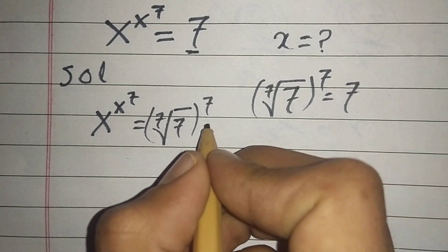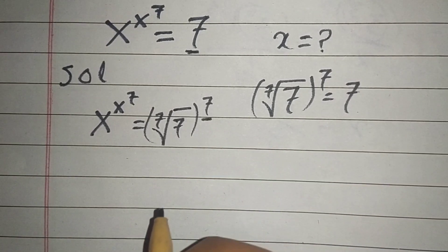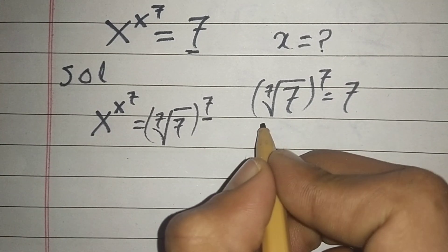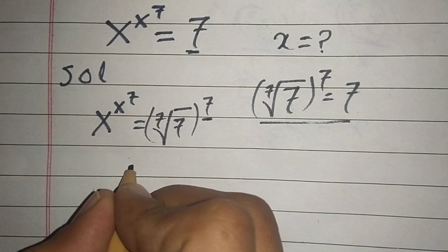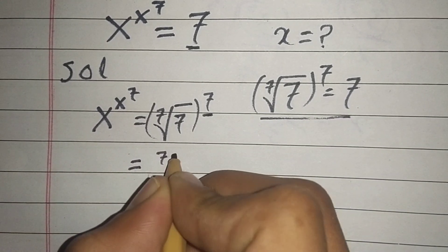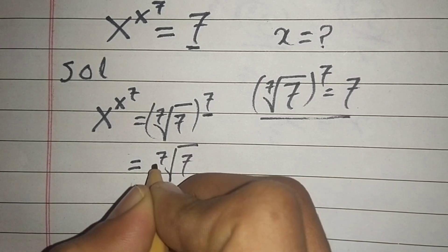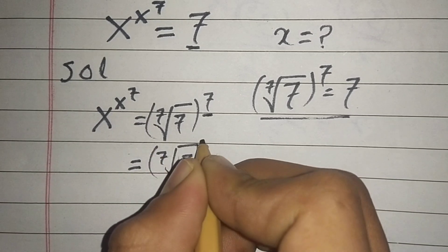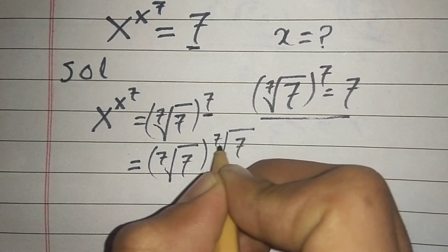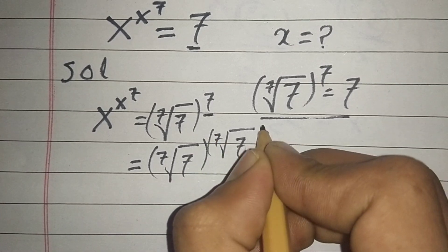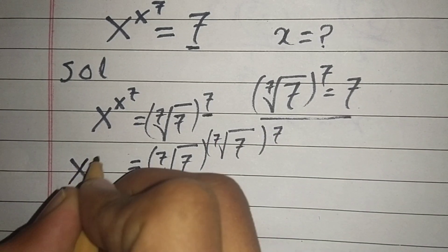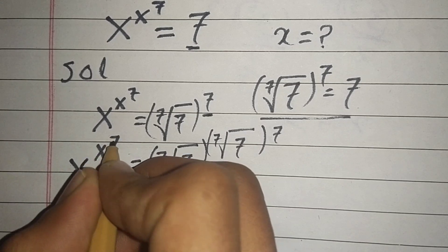But again we have 7 in the power. So we can write this 7 again in expanded form. This equation becomes (7^(1/7))^((7^(1/7))^7) equal to x^(x^7).